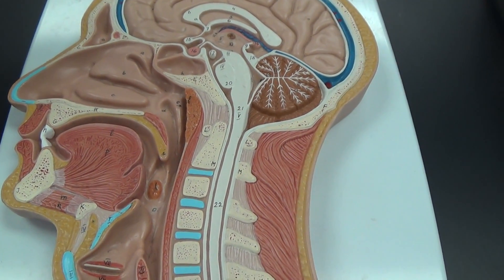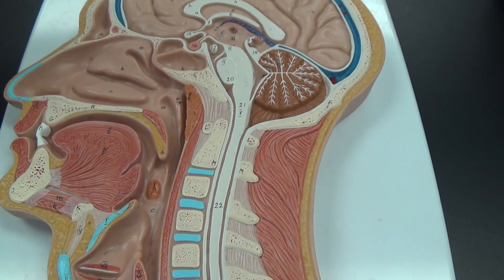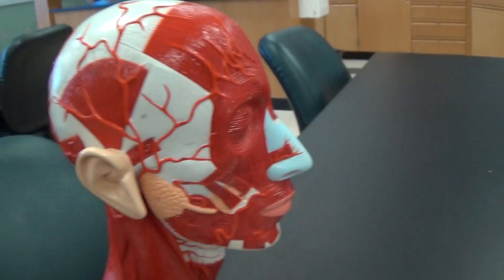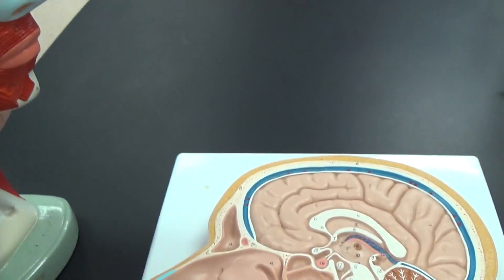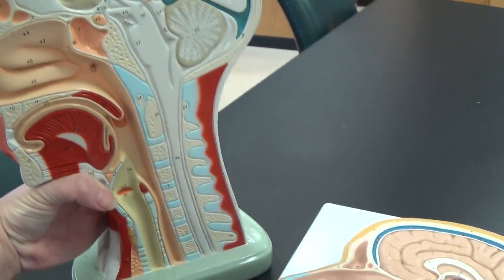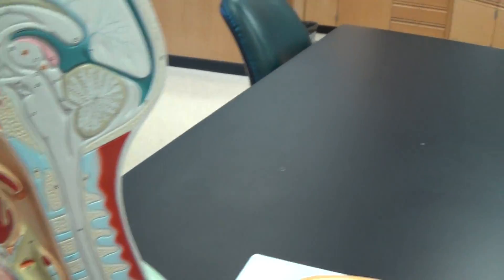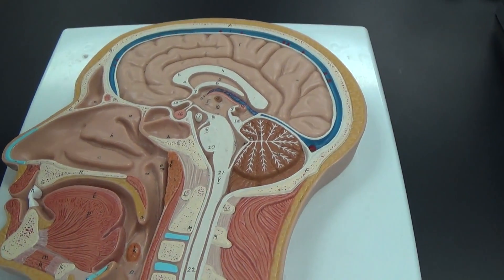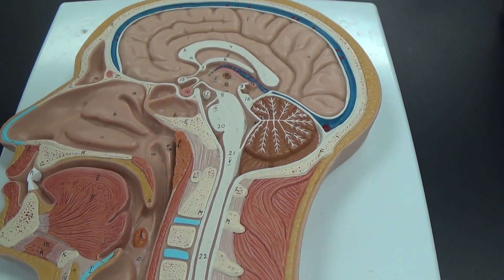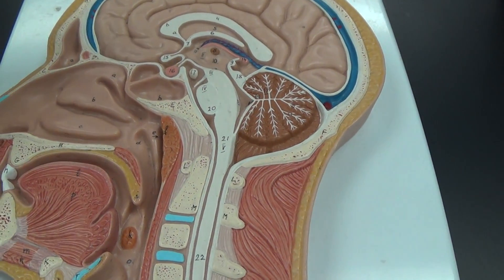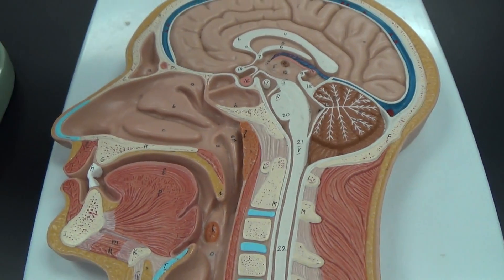Alright, we're doing the half a head, which includes this model over here. It will look like this on the same sort of system, and deals with both the respiratory and digestive system.